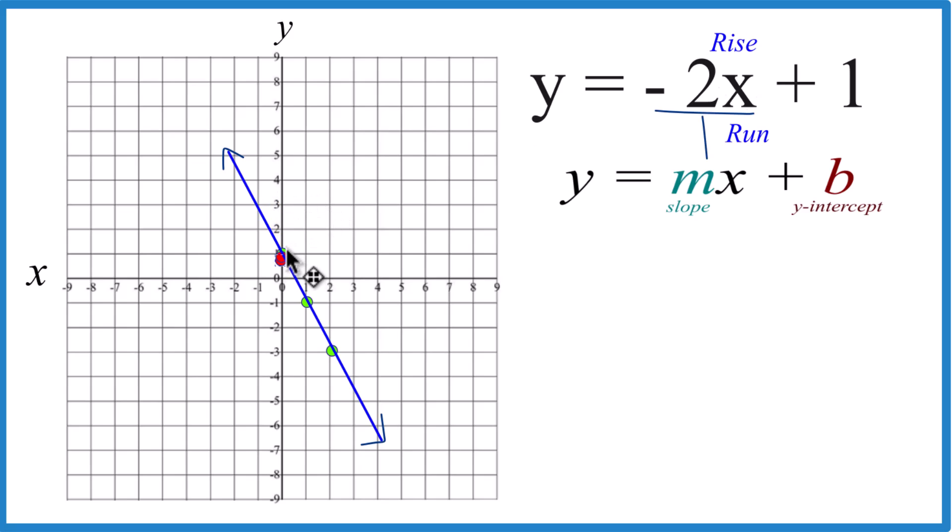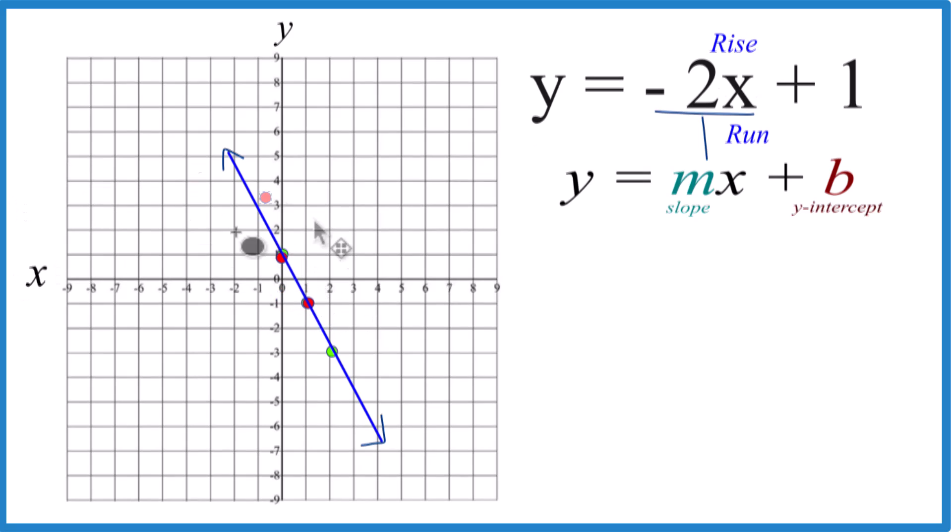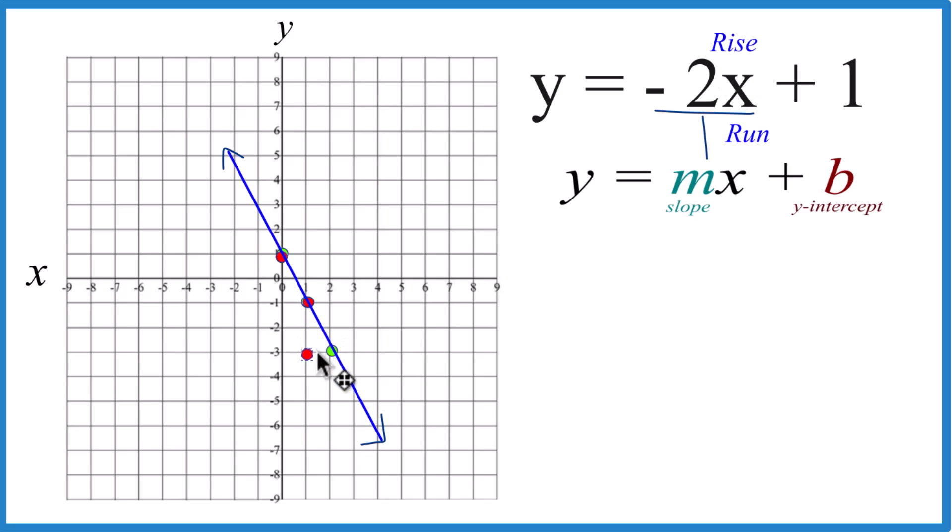Negative two. So we have to go down. One, two, over one. Let's do it again. Down one, two, over one. That line is on our graph there.